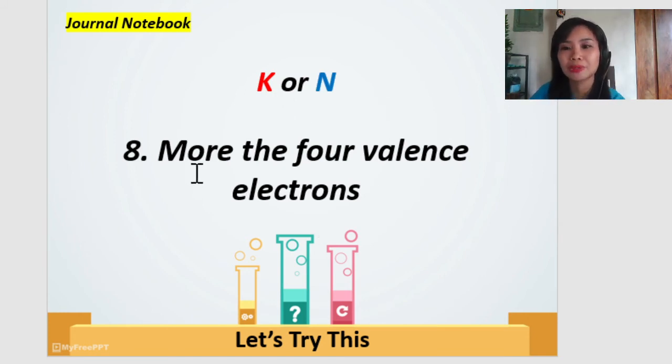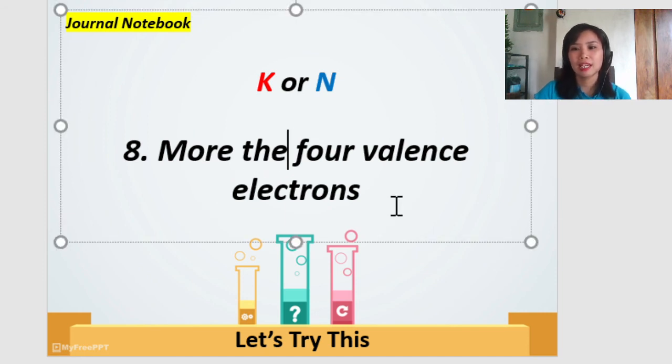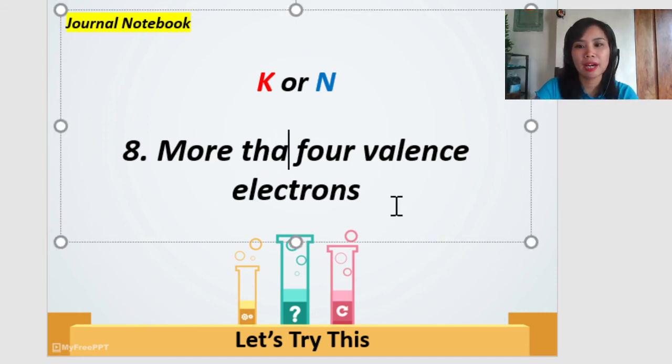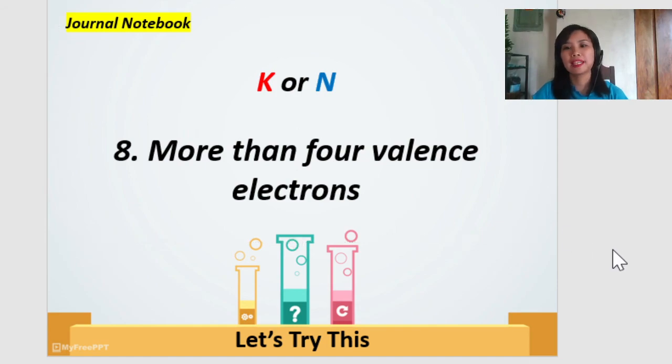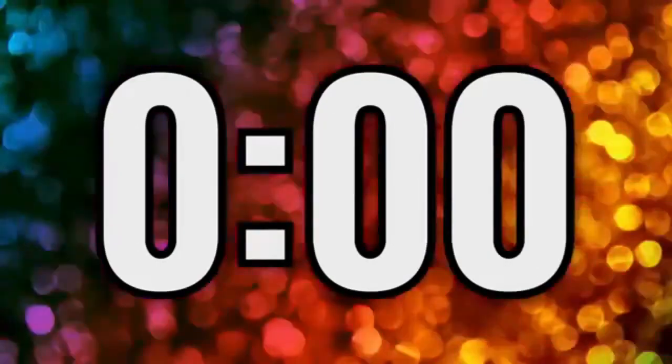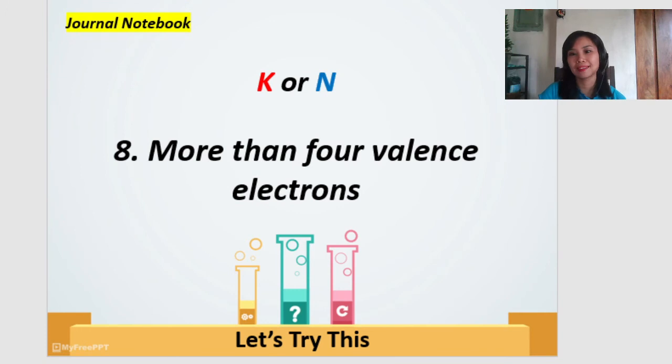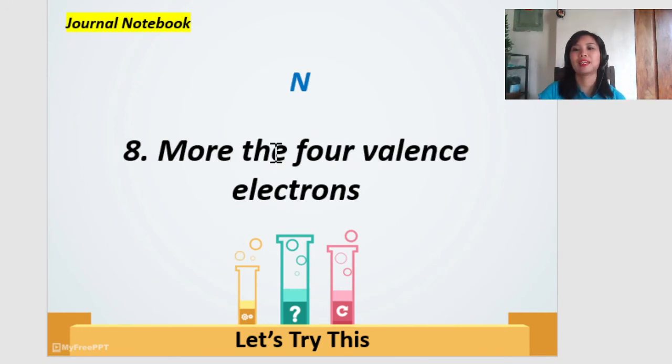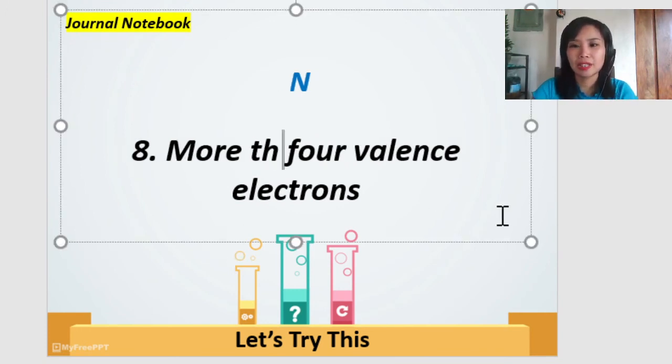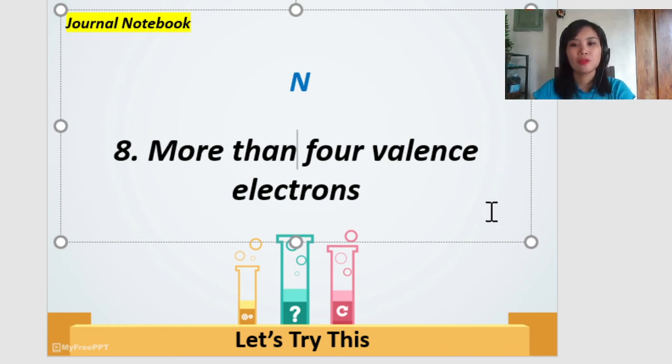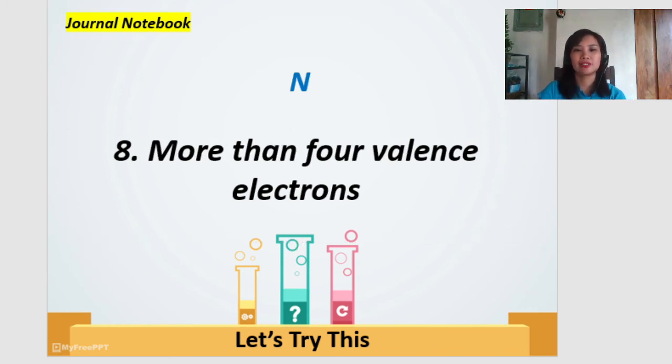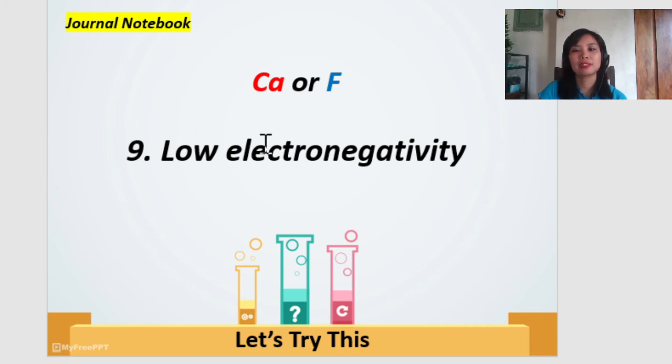Potassium or nitrogen. More. More than. Sorry, wrong. It's more than four valence electrons. Ready? Go. So, the correct answer is very good. It's the nitrogen. It has more than four valence electrons. Okay. How about this?